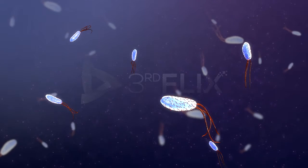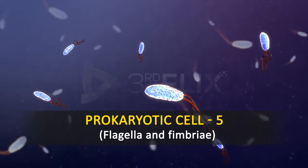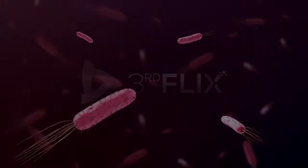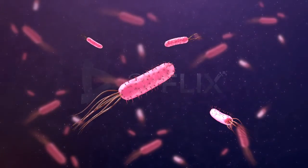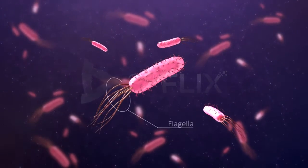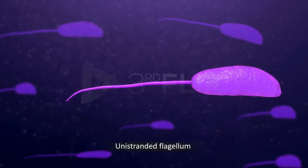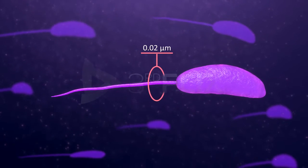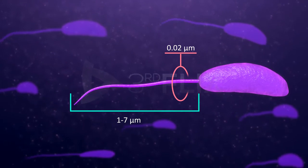Objective: To study about the prokaryotic cell — flagella and fimbria. Bacterial cells may be motile or non-motile. If the bacterial cells are motile, they have thin filamentous extensions from their cell wall called flagella. Bacterial flagella are unistranded, equal to a single microtubular fibre. A bacterial flagellum is about 0.02 mm in diameter and 1 to 7 mm in length.